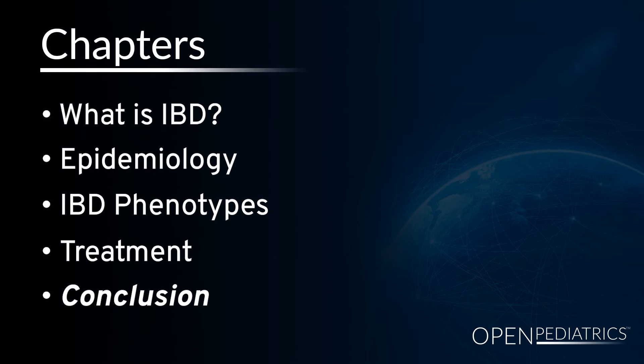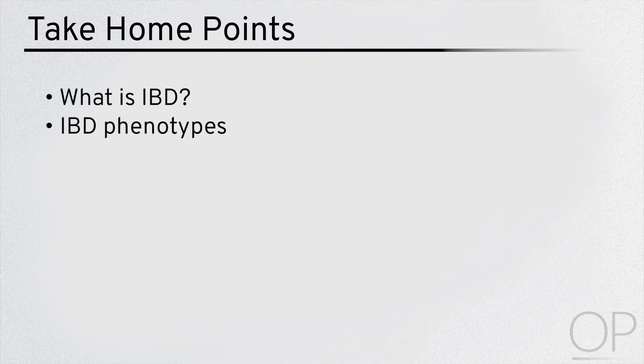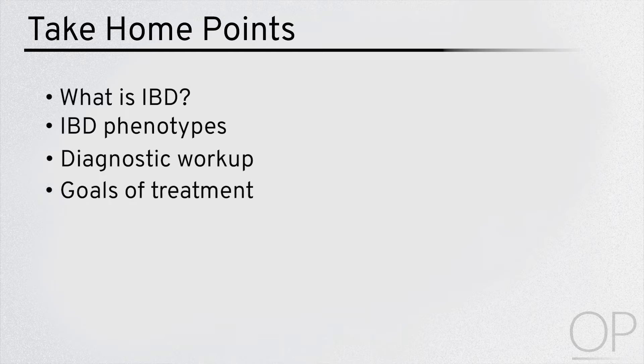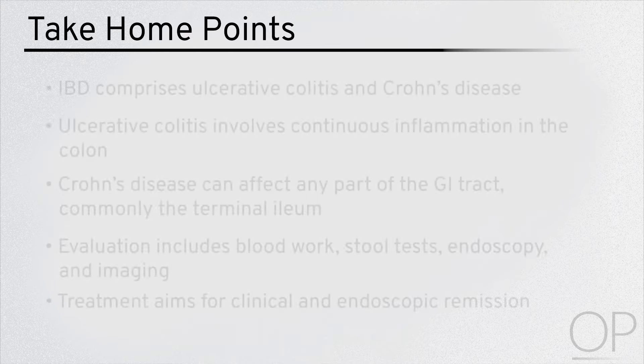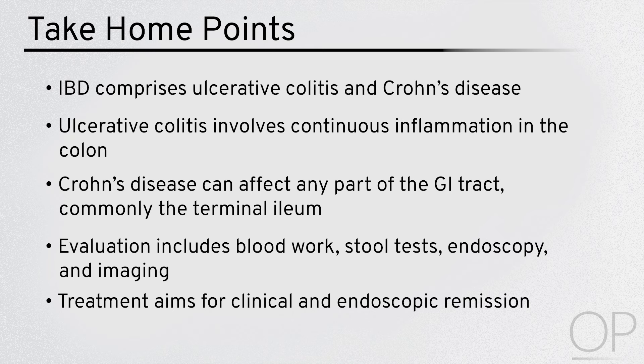Conclusion. Thank you for watching this video on pediatric onset IBD. We hope you are equipped with an improved understanding of what is IBD, IBD phenotypes, diagnostic workup, goals of treatment, and available treatment options. IBD comprises ulcerative colitis and Crohn's disease. Ulcerative colitis involves continuous inflammation in the colon. Crohn's disease can affect any part of the GI tract, commonly the terminal ileum. Evaluation includes blood work, stool tests, endoscopy, and imaging. Treatment aims for clinical and endoscopic remission.